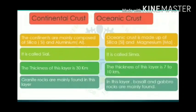The oceanic crust is made up of silica (Si) and magnesium (Mg), so it is called Sima. The thickness of this layer is 7 to 10 kilometers. Basalt and gabbro rocks are mainly found in this layer. The density of this layer is approximately 2.9 to 3.3 grams per centimeter cube.